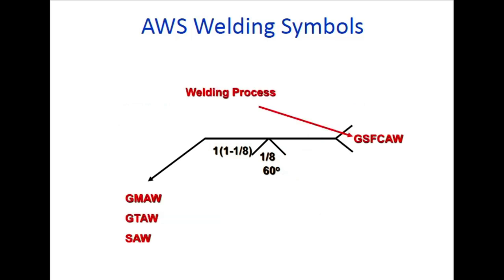If you want to mention the welding process, you can mention it in the welding symbol. The GSF safe value - 1/8 inch is the root gap and 60 degrees is the angle.